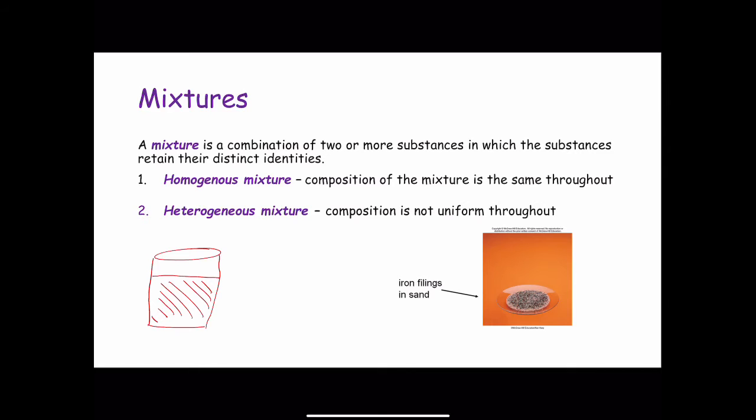If sand is mixed with iron filings, however, the sand grains and the iron filings remain separate. This type of mixture is called a heterogeneous mixture because the composition is not uniform.